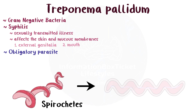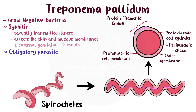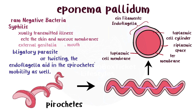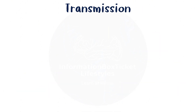which are long, thin, and include endoflagella — a band of spiraling protein filaments that give the spirochetes their spiral form and resemble somewhat less tasty curly fries. By spinning or twisting, the endoflagella aid in the spirochetes' mobility as well. This action is similar to a drill gradually digging into a piece of wood.